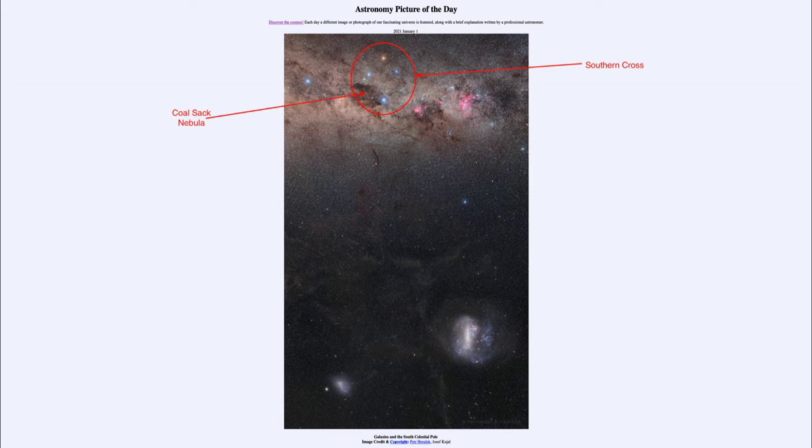Now as we continue to look around at other objects, the next two very prominent objects are down towards the bottom of the image, and those are the Magellanic Clouds. Those are two small satellite galaxies of our Milky Way. On the right, we see the Large Magellanic Cloud with a little more structure to it.